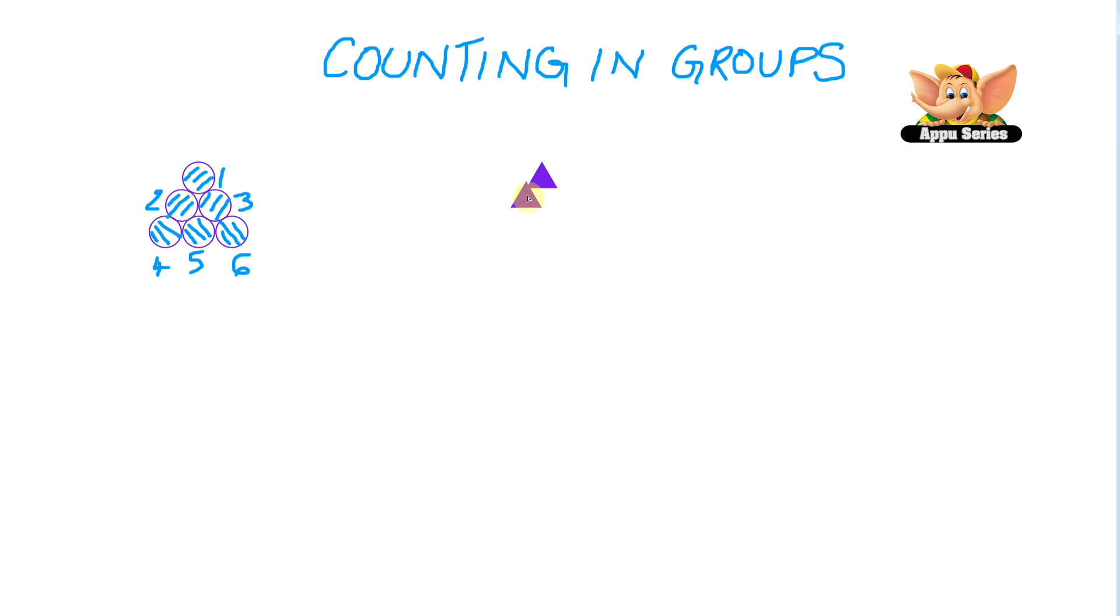Let me give you a different example. Let's count this group. We have one, two, three. That's three on the top. Then we have one, two, three. That's three in the middle. So that's six plus one, two, three, four. So that's six plus four on the bottom, which gives you ten.